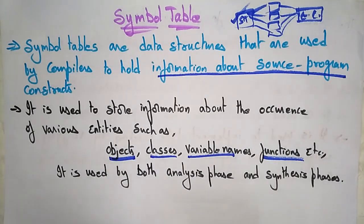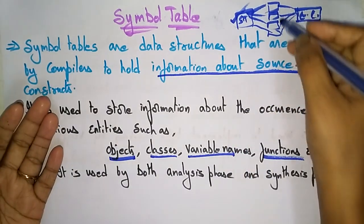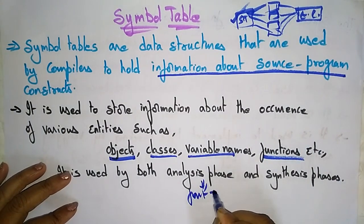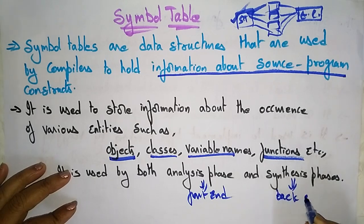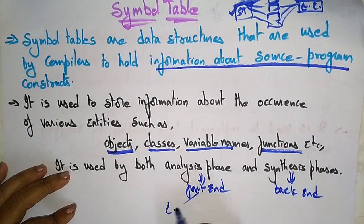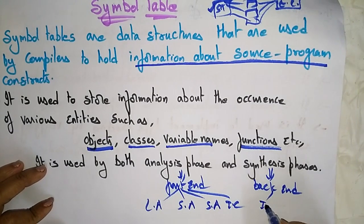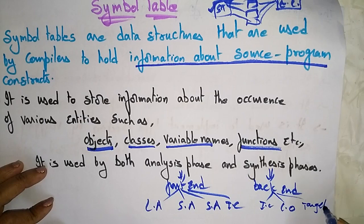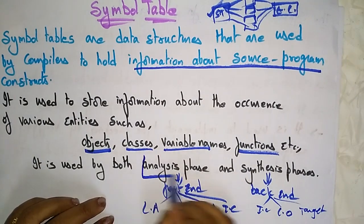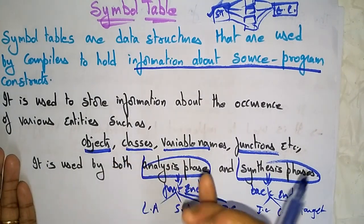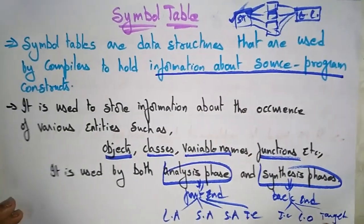The symbol table can be used in all phases — the analysis phase and the synthesis phase. The analysis phase is the front end, which includes the lexical analyzer, syntactic analyzer, semantic analyzer, and intermediate code generation. The synthesis phase is the back end, which includes code optimization, and finally you get the target machine code. So the symbol table is used in both the analysis phase and the synthesis phase.